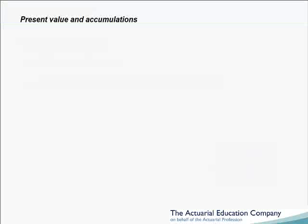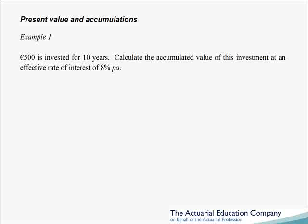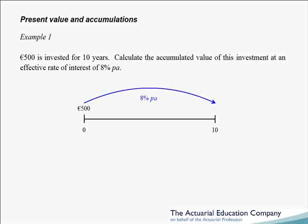In a previous unit we looked at accumulations. For example, if we have 500 euros and invest that for 10 years, calculate the accumulated value of this investment at an effective rate of interest of 8% per annum. Recall that to accumulate over 10 years at 8% per annum effective, we multiplied by the accumulation factor 1.08 to the power of 10. This gives us 1079 euros and 46 cents.